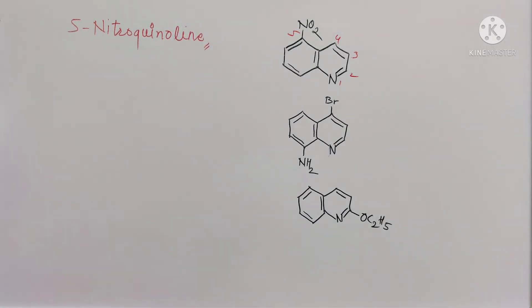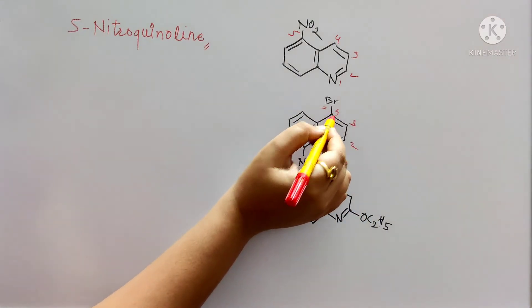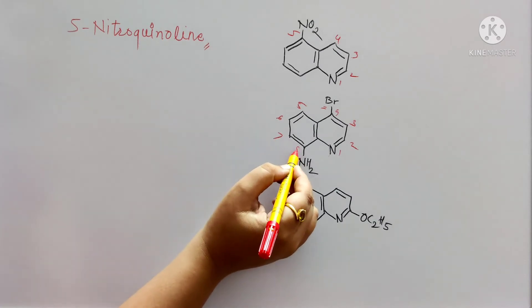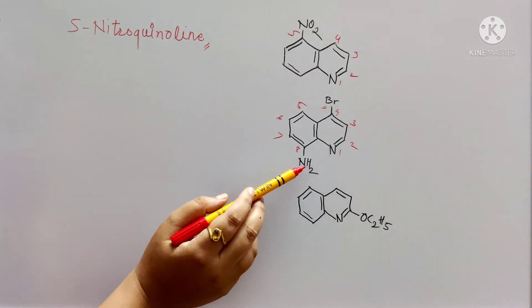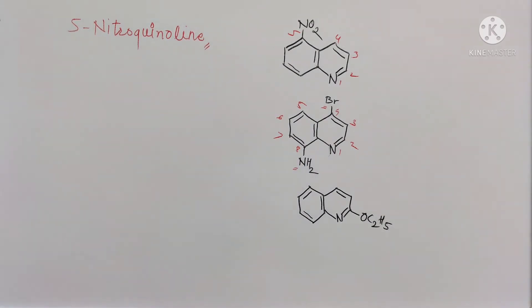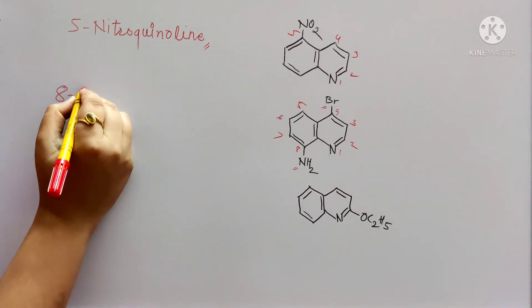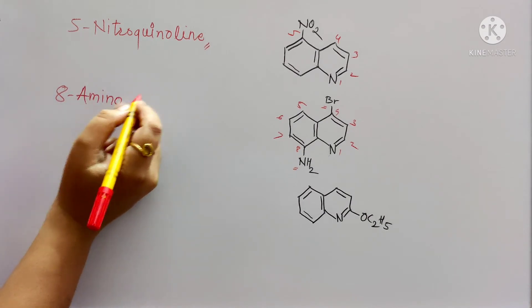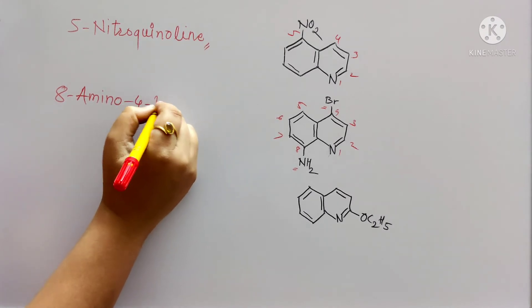See the next example. Substituents present are bromo and amino. Give numbering first: 1, 2, 3, 4, 5, 6, 7, 8. In this case, bromo is attached to the 4th position and amino to the 8th position. Alphabetically, amino group comes first, so begin the name with amino. It will be 8-amino, next 4-bromo, followed by quinoline.